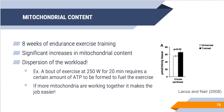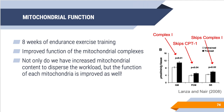Endurance training also improves the functioning of each individual mitochondria, in addition to increasing mitochondrial content. Looking at substrates feeding complex 1 (glutamate and malate, GM), palmitoyl carnitine and malate (PCM, bypassing CPT1), or succinate and rotenone (SR, skipping complex 1 and starting at complex 2): the key takeaway is that trained individuals (black bars) show an increase in mitochondrial function compared to untrained (white bars), both in terms of content and in functioning of each individual mitochondrion.